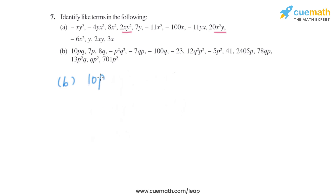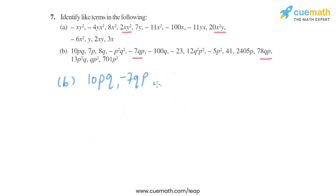Now let's move on to part B. The first term given is 10PQ, with variables P and Q. Its like terms are minus 7QP and 78QP — they have the same variables, and the coefficient doesn't matter. So 10PQ, minus 7QP, and 78QP are like terms.